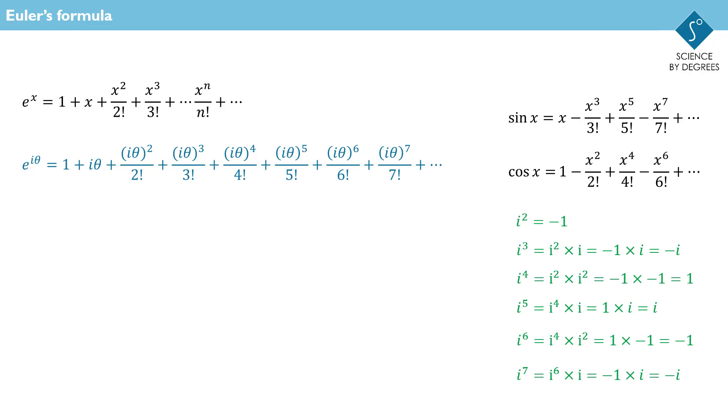Look how they cycle through the permutations. Two negative, two positive and so on. One with i, one without and so on.